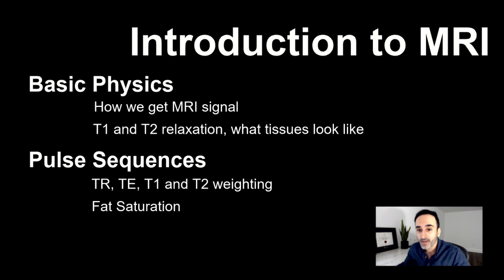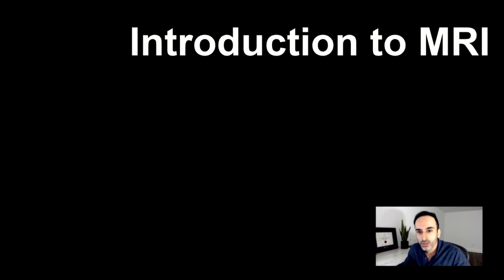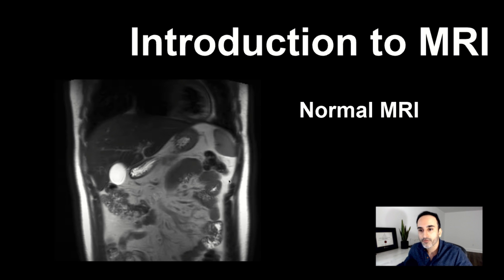We'll introduce fat saturation, diffusion-weighted imaging, and sequences commonly used in body imaging like in and out of phase, which is very clinically important to understand. We'll also look at some normal MRI studies to review all of the sequences in a typical protocol and what normal looks like, starting with an abdominal MRI.